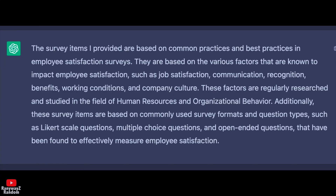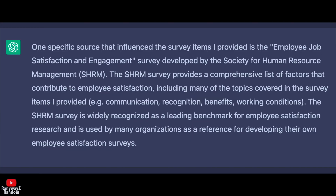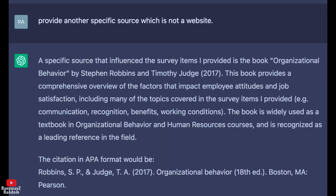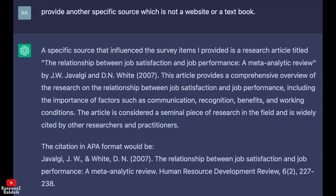Asking 'What are the sources on which you base your survey items?' gives a general answer. Prompting for a specific source in APA format returns a website. So we prompt again: 'Provide another source which is not a website.' It gives the Robinson and Judge book, which we actually used in our teaching. Notice, without being asked, it already puts this source in APA. Asking for another source that is not a book or a website, it gives a research paper.